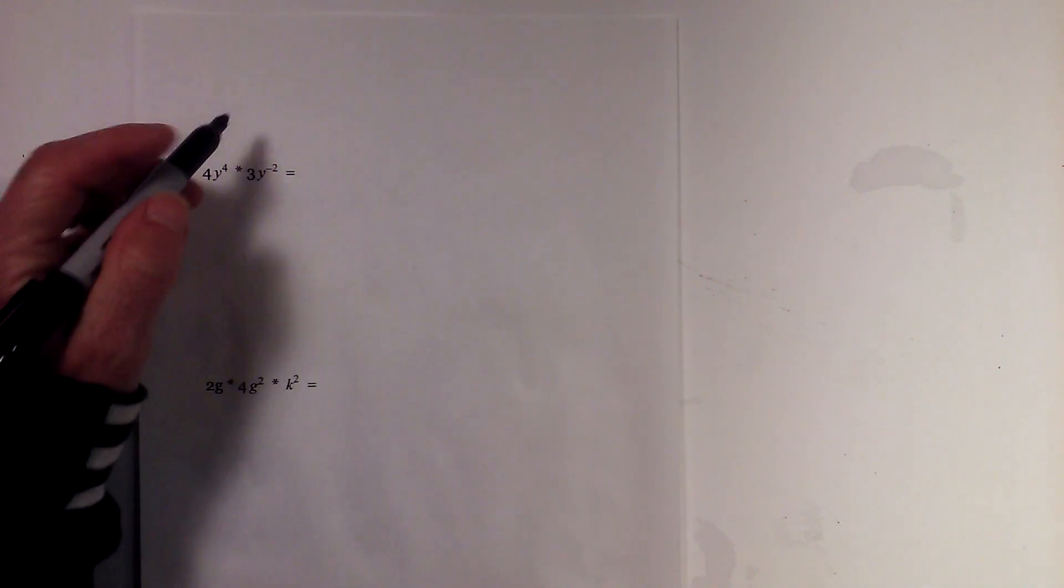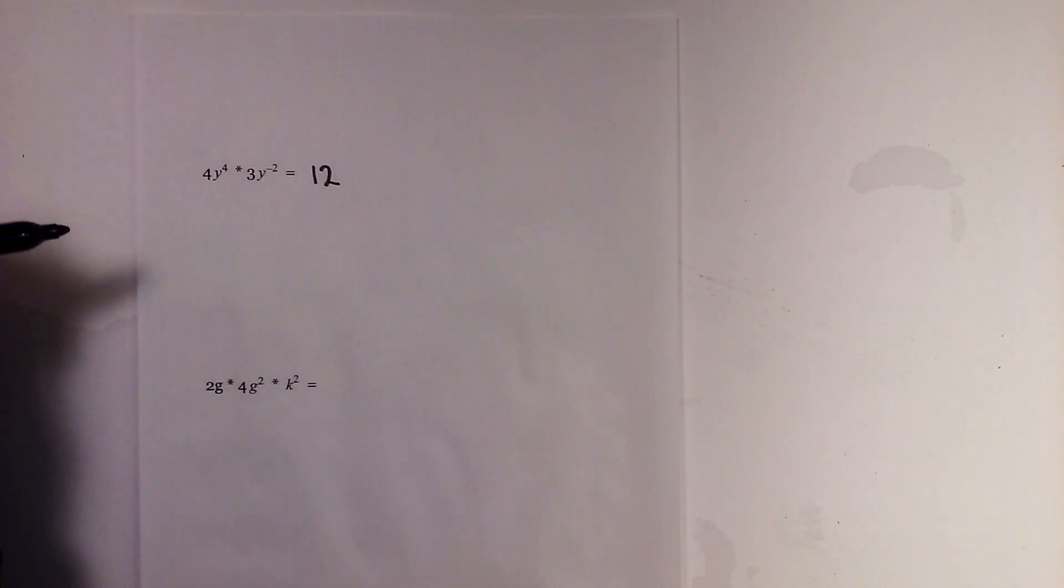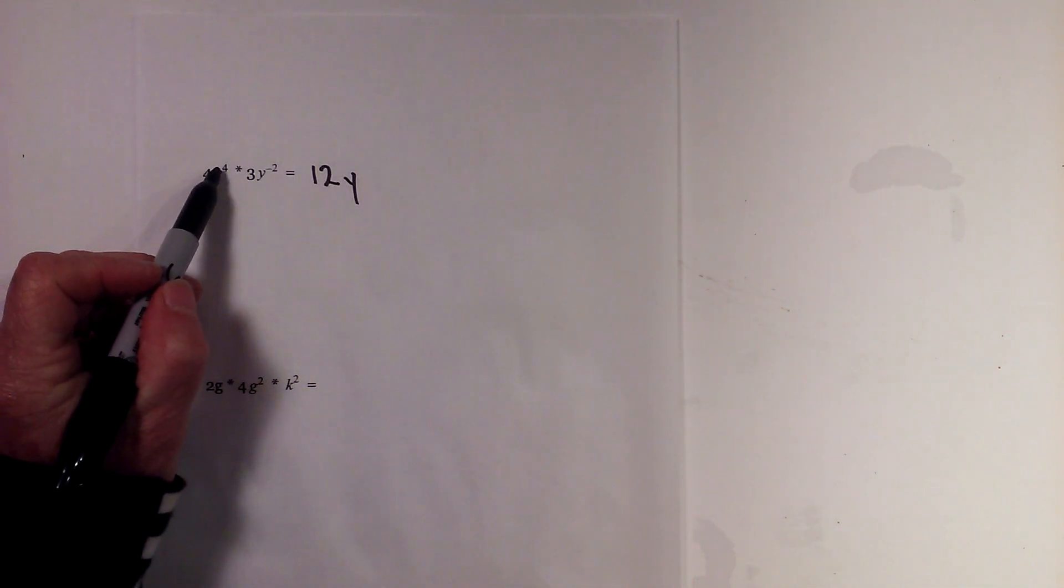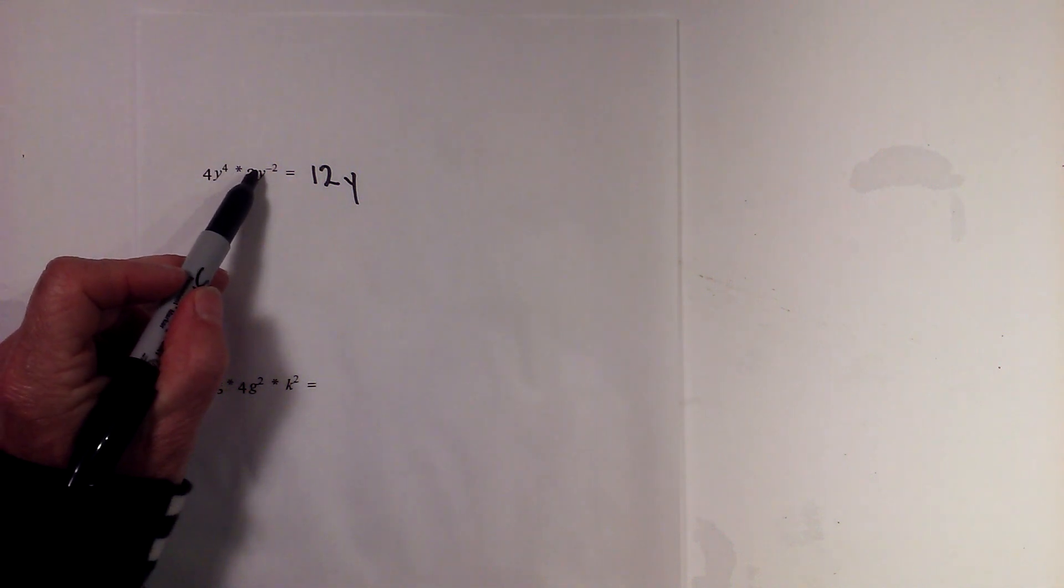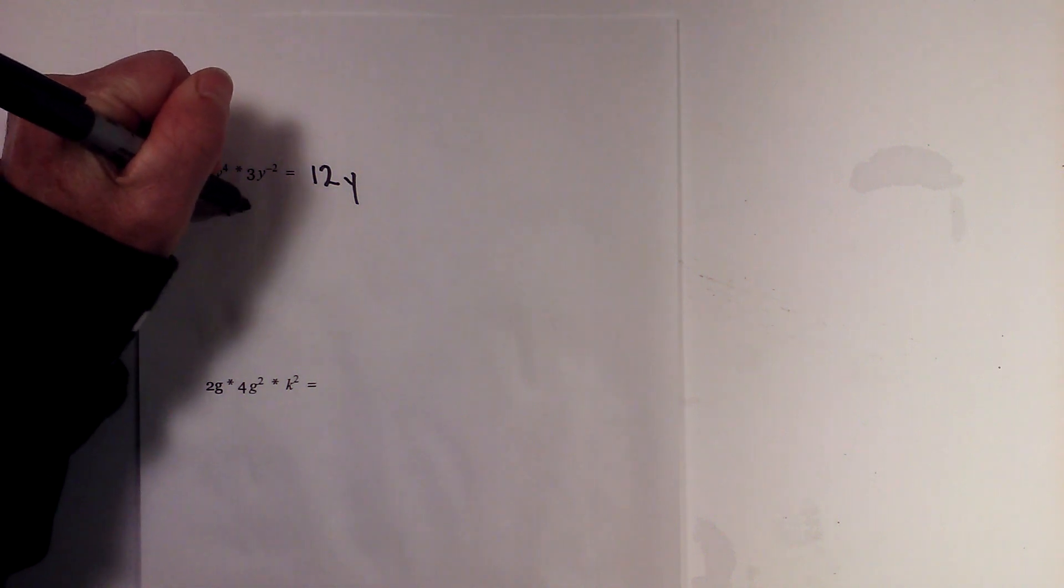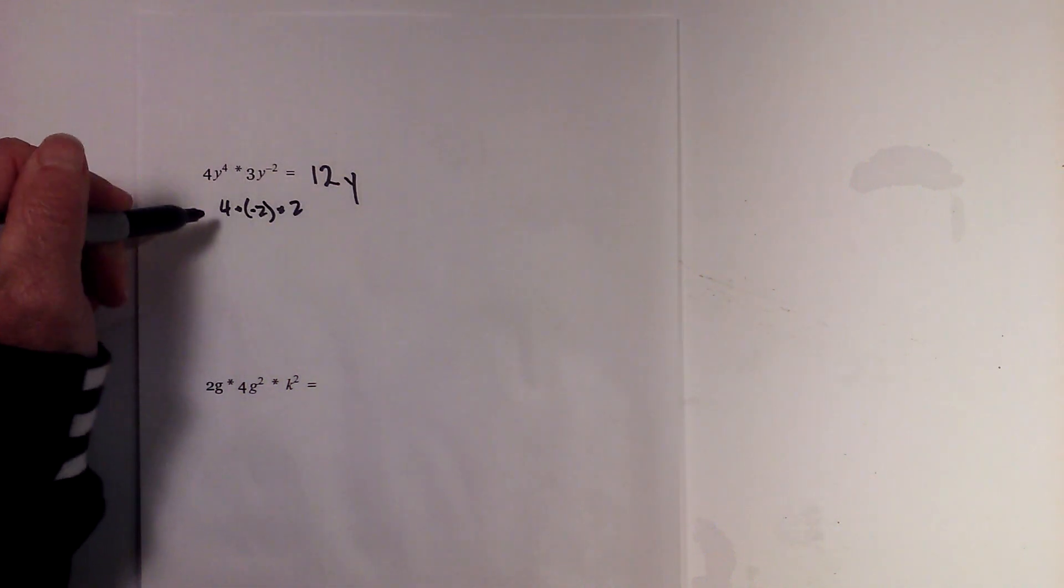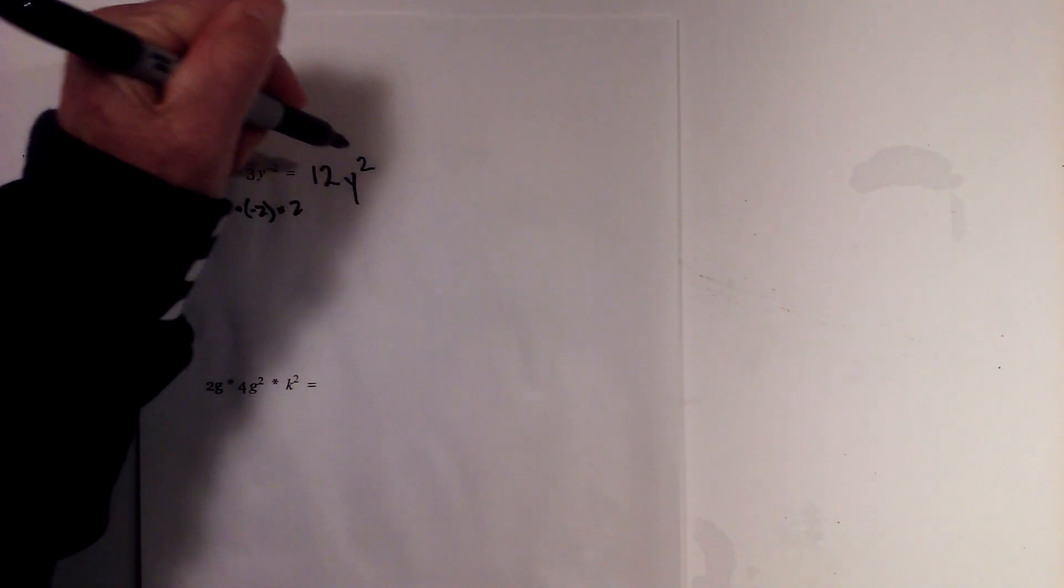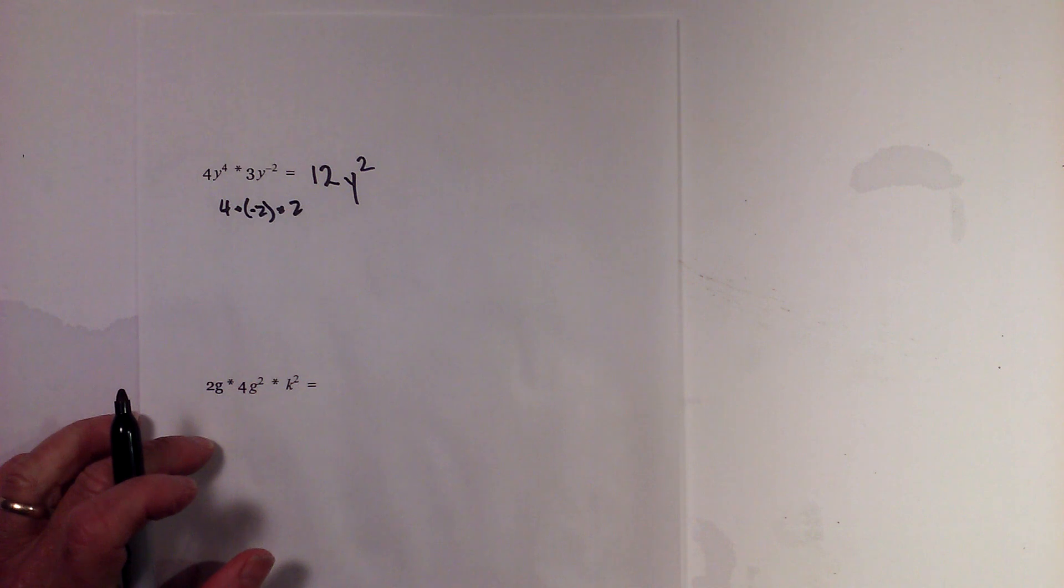Four times three is twelve. Let's use y because y is our like base. Now we have four plus a negative two. Well, four plus a negative two is equal to two because you subtract them and take the sign of the larger number. So that will be twelve y to the square, or twelve y squared.